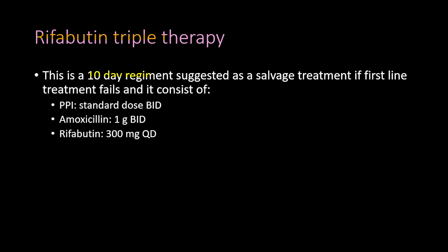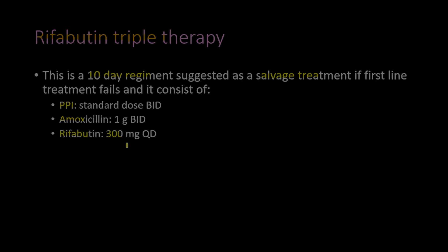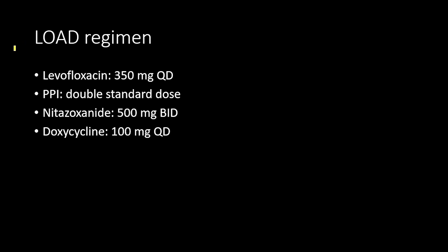The rifabutin triple therapy is a 10-day regimen suggested as a salvage treatment if first-line treatments fail. It consists of three medications: a proton pump inhibitor, amoxicillin, and rifabutin 300 mg once a day. Another regimen called LOAD consists of levofloxacin 350 mg once a day, a proton pump inhibitor at double standard dose, nitazoxanide 500 mg twice a day, and doxycycline 100 mg once a day.